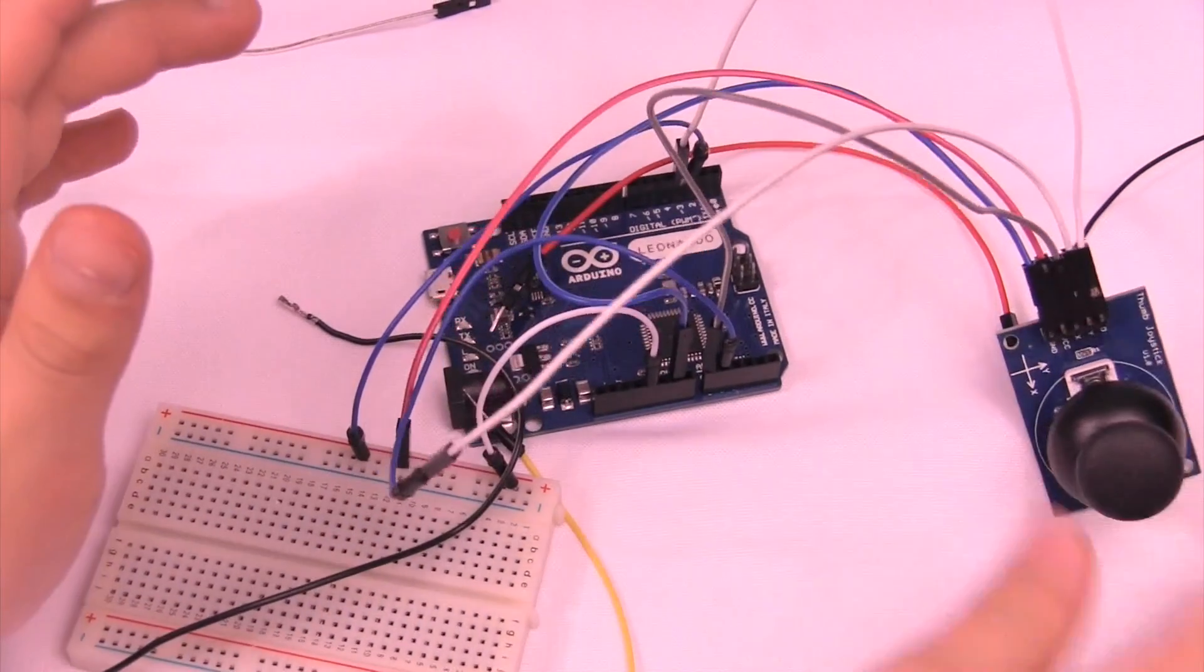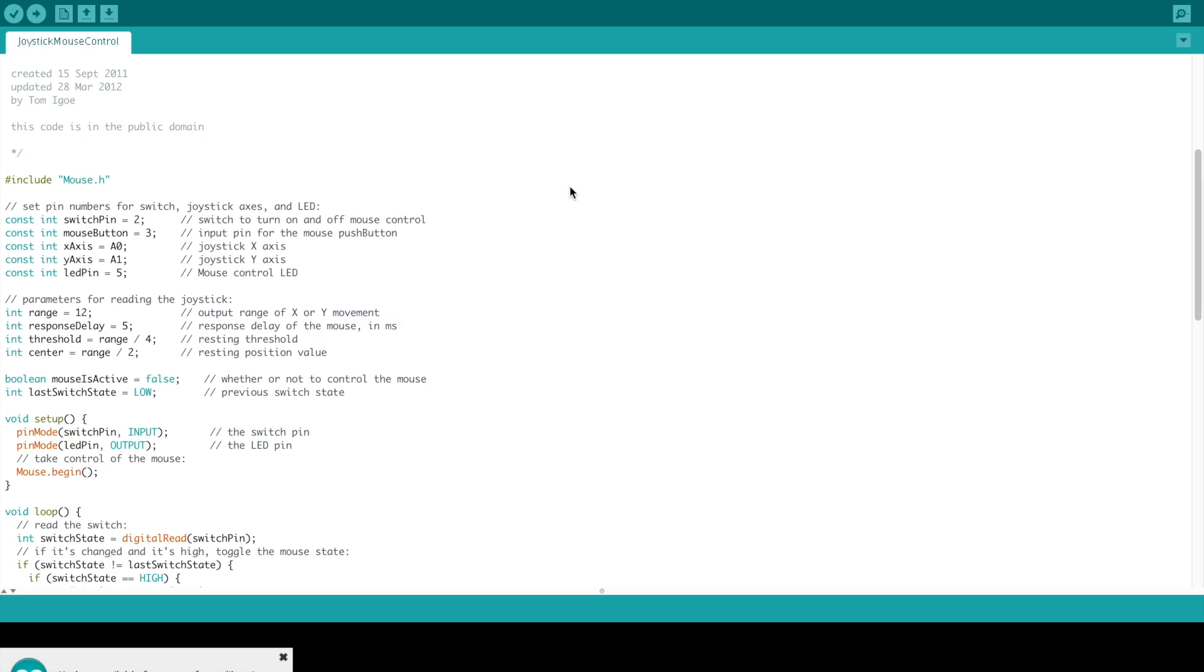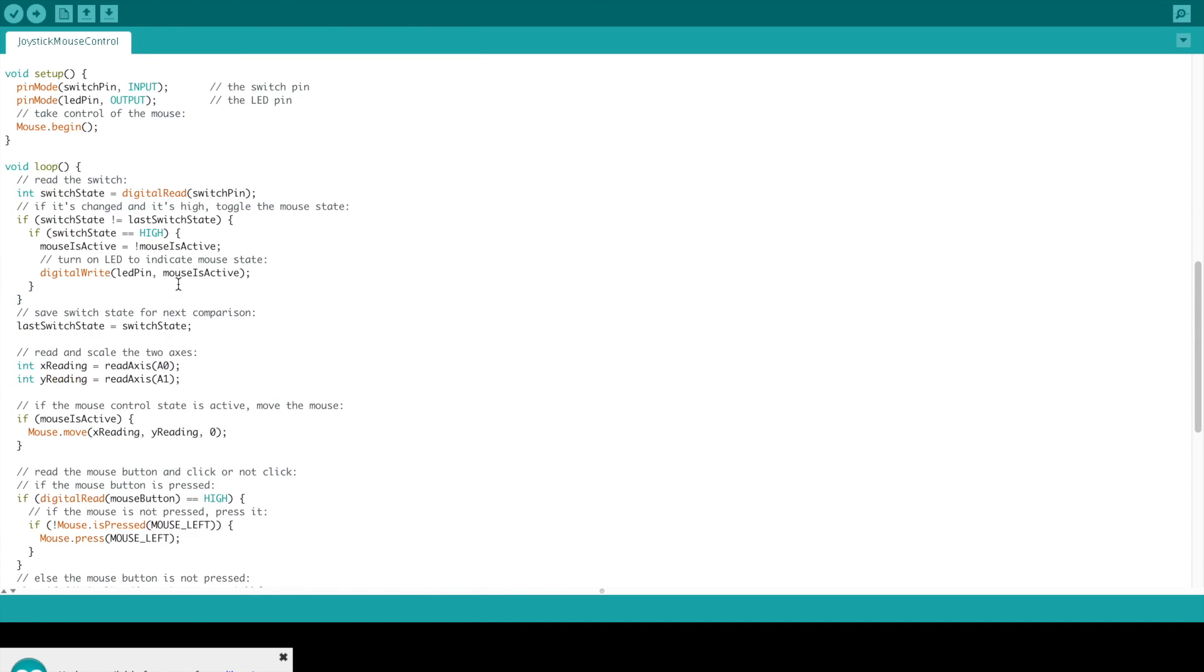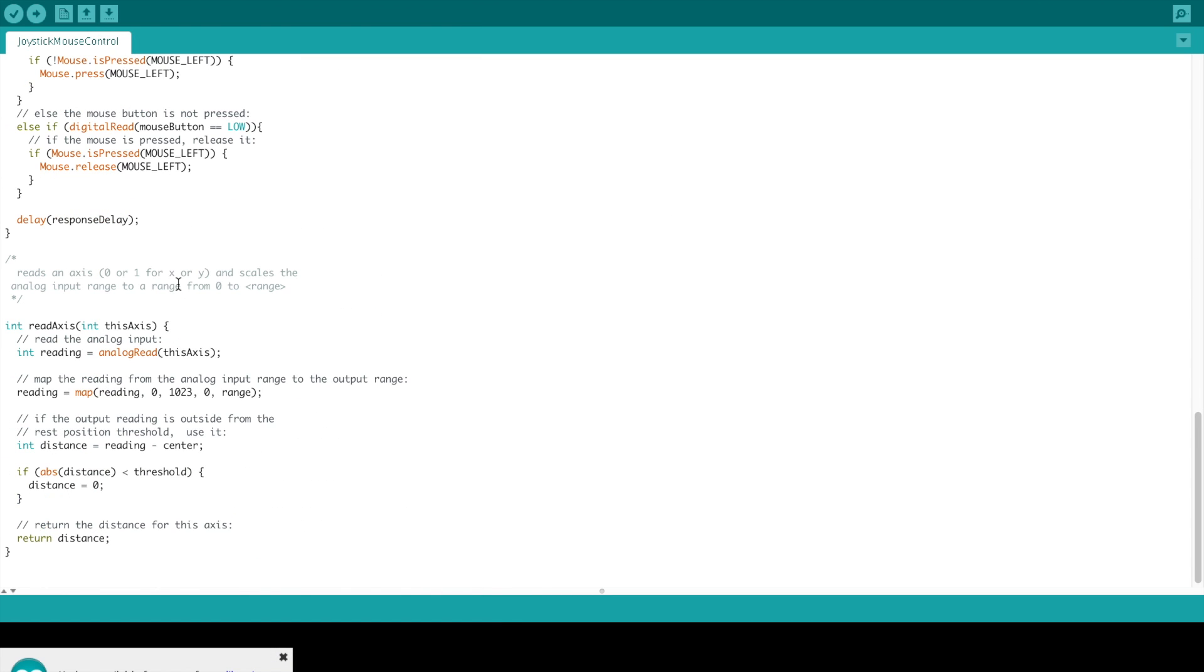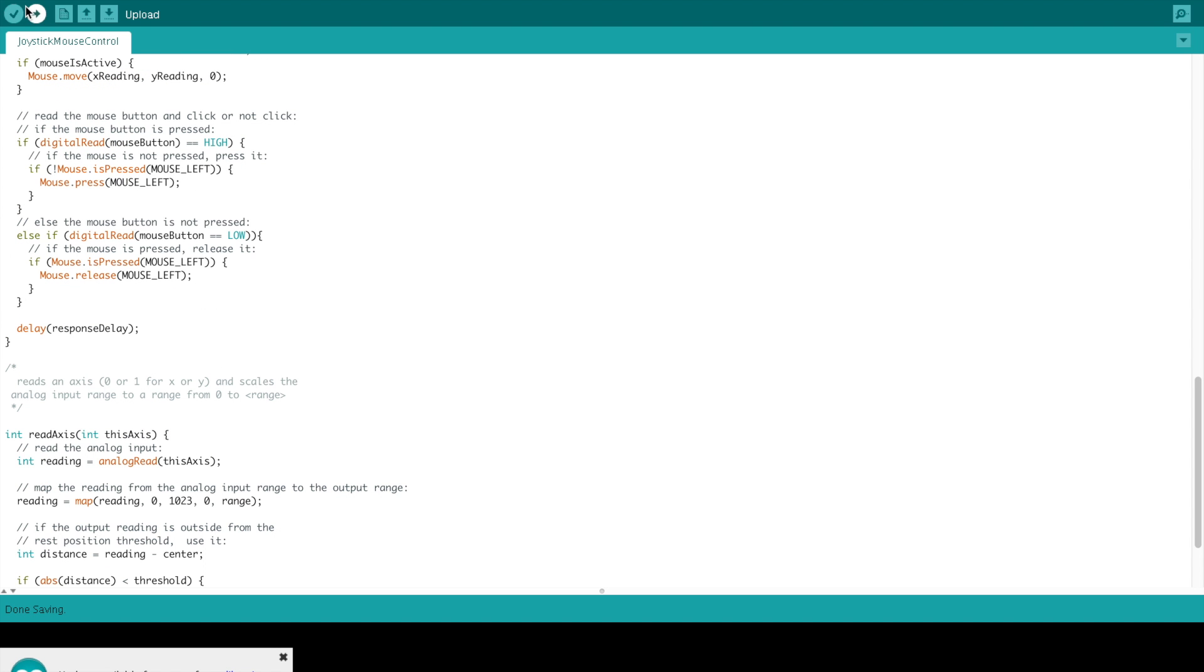So here we have our code, and you can find this code from File, Examples, USB Mouse, and Joystick, and this is what you'll get. And then you can just go ahead to plug in our Leonardo.